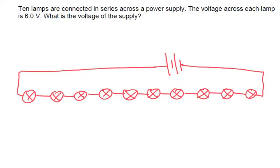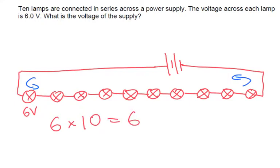If each of these bulbs has got six volts across it, because we're only dealing with one loop going all the way around, then we know the sum of the PDs across all these bulbs is going to equal the EMF coming out from the battery. So we've got six volts across each one, so that's going to be six times by ten, which is going to give us 60 volts.